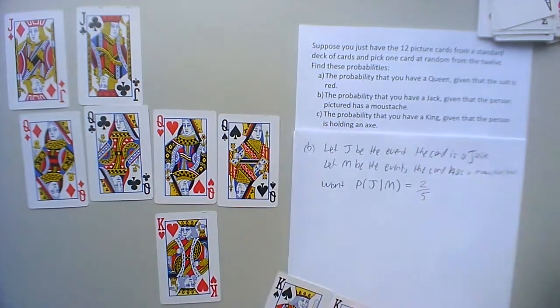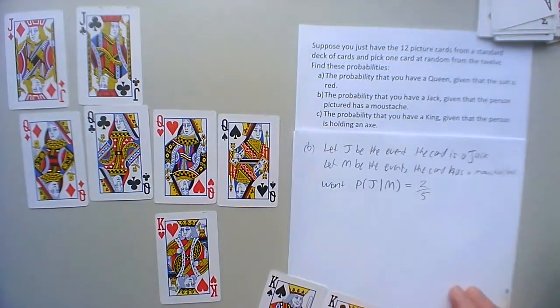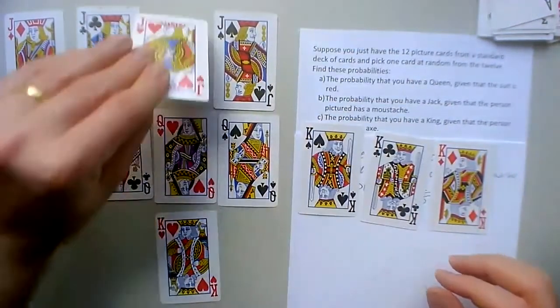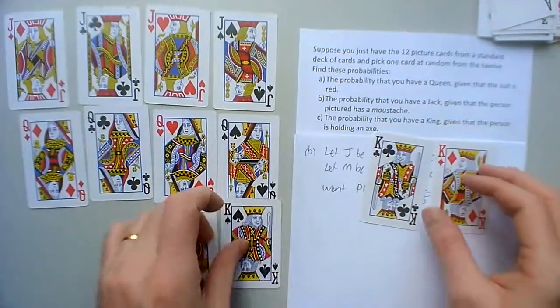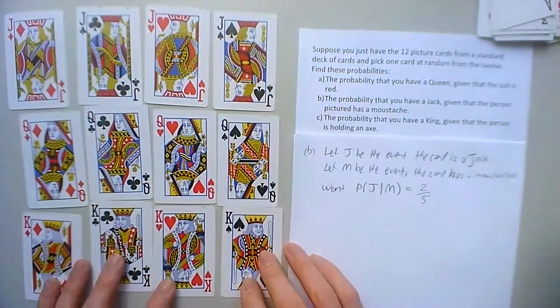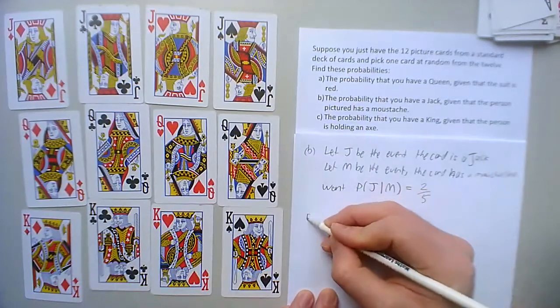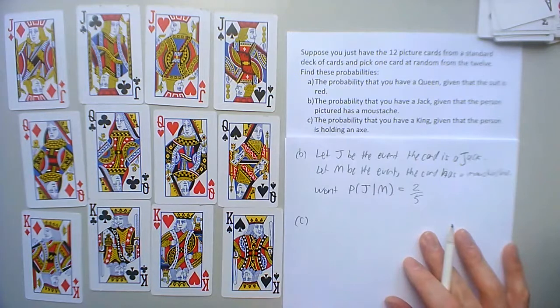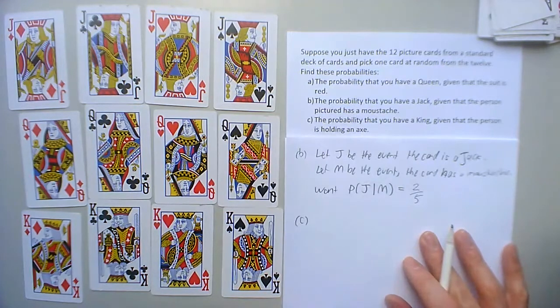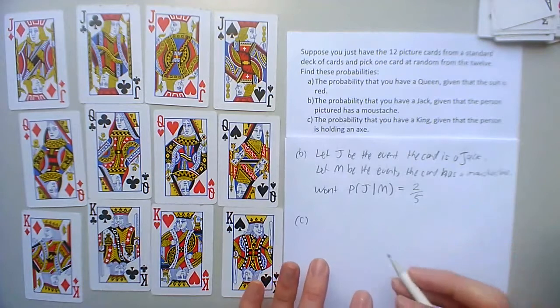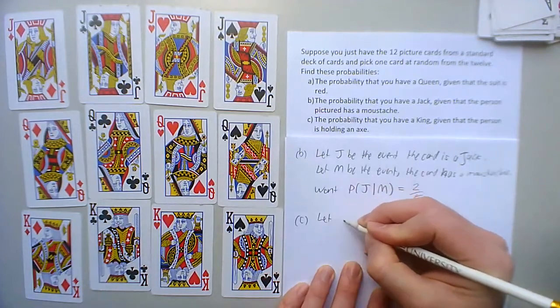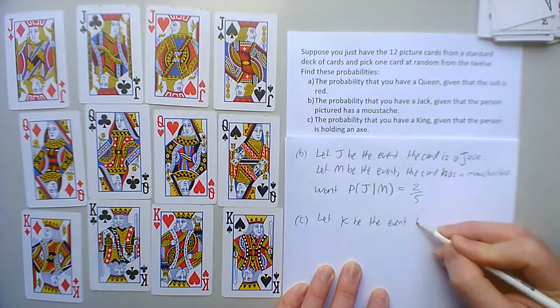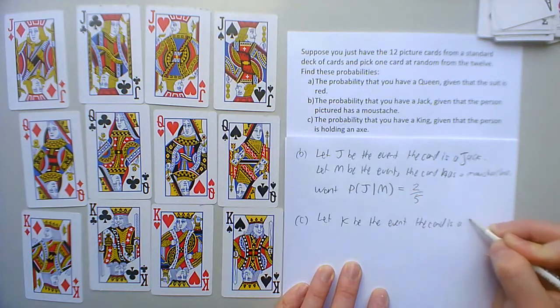So it's going to be out of five, and two of them are jacks. So two jacks out of five mustaches total, two out of five. Okay. Well I'll just put them back so that I can do the last question. Okay, so part c: the probability that you have a king given that the person is holding an axe. Oh yeah, they are all holding stuff, but I'll look closer at whether it's an axe or not in a minute.